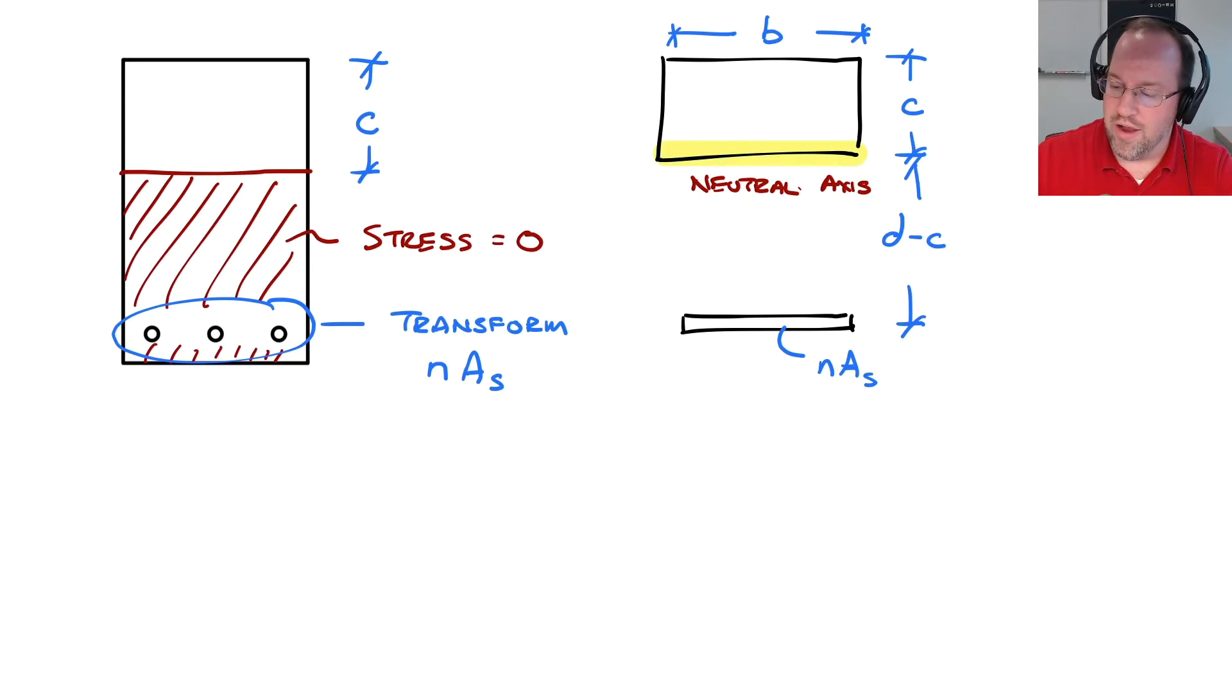So now let's go ahead and find that distance C. So if I want to find C, I need to balance out the area above the neutral axis with the area below the neutral axis. So above the neutral axis, I have B times C as the area, and I need to consider its moment about the neutral axis, which is a distance of one half of C from the neutral axis. And then I need to consider my area of the transformed steel, which is N times AS, and its distance from the neutral axis, which is D minus C.